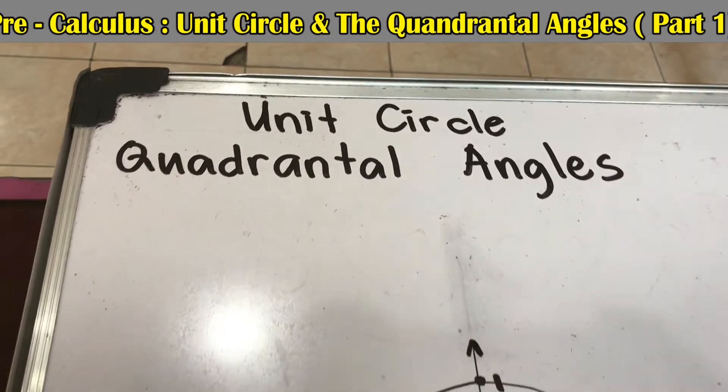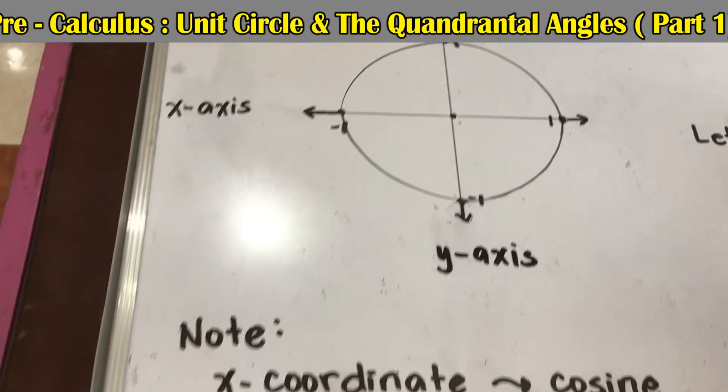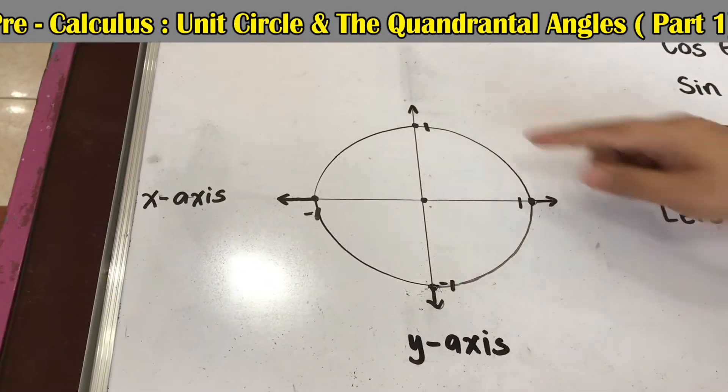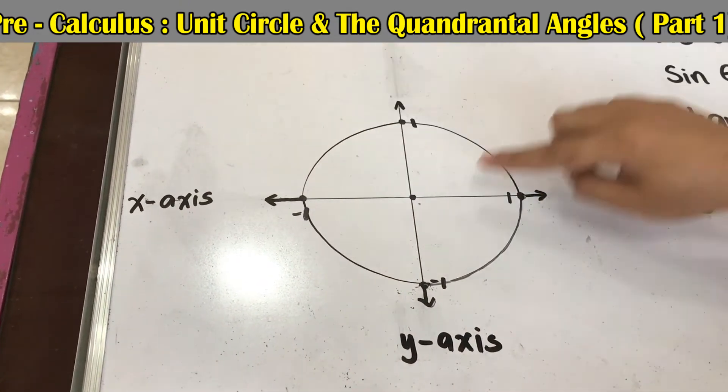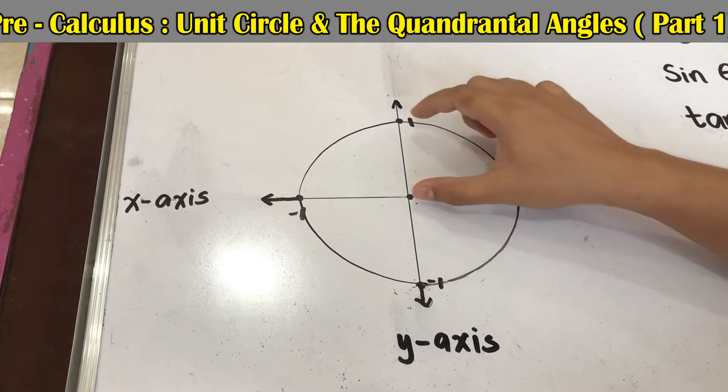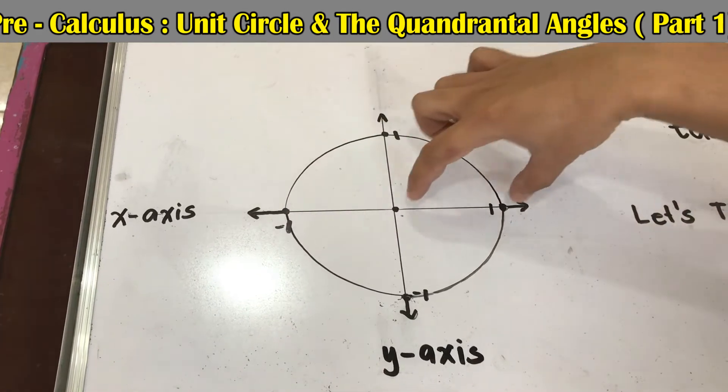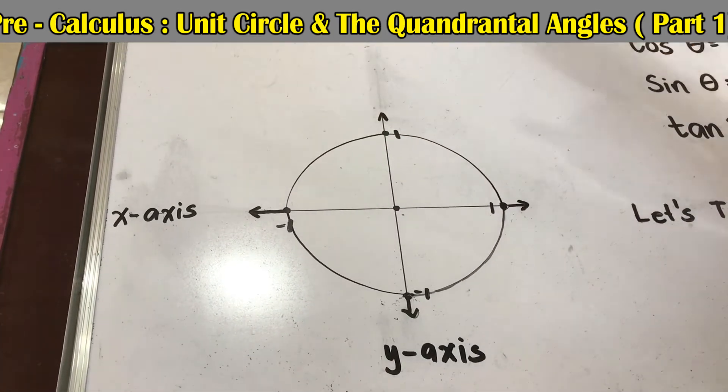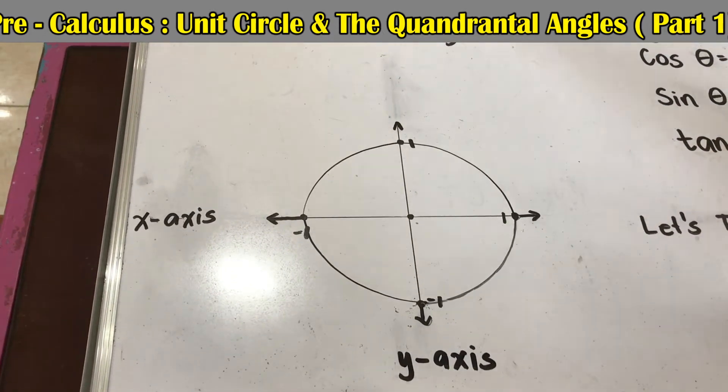Let me introduce to you the unit circle and quadrantal angles. In our Cartesian plane we have the y-axis and the x-axis. From the origin we have one unit up, one unit down, one unit to the left, and one unit to the right. That's why it's called the unit circle.